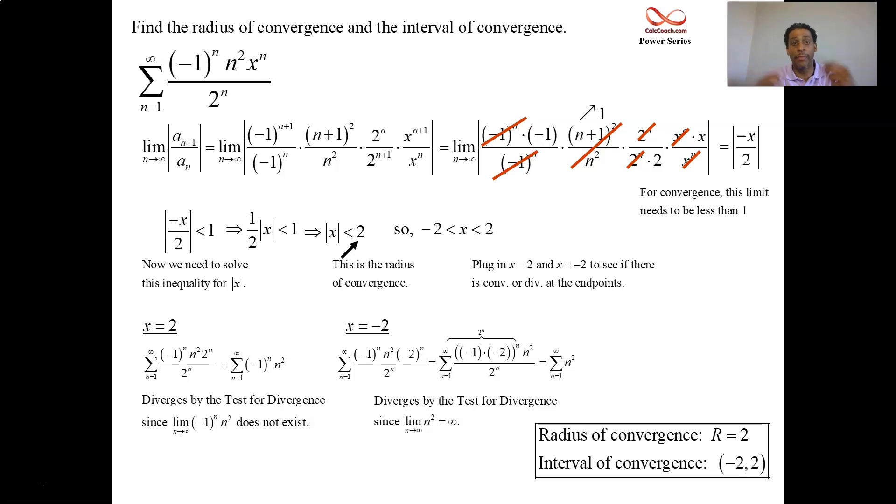Radius of convergence is 2. That's what you add and subtract from the center to get your x values that give you convergence. So this is the classic question that you'll have. Find the radius of convergence, or more likely than that, find the interval of convergence. Tell me what x's make this series converge.